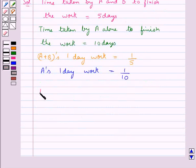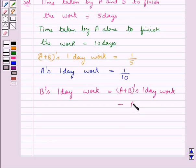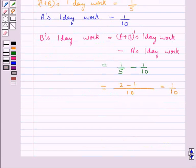So from here we can easily find out B's one day work and this is equal to A plus B's one day work minus A's one day work. And so this is equal to 1 upon 5 minus 1 upon 10 which comes out to be equal to 1 upon 10. So we get B's one day work would be 1 upon 10. That is B finishes one tenth of the work in one day.